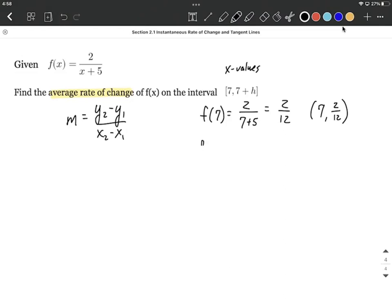The next one is we have that other x value, which looks strange, but that's okay. Let's go with 7 plus h, gets evaluated into the function, and we're going to get 2 over 7 plus h plus 5, which is going to work out to be 2 over 12 plus h, or h plus 12. From here, let's go ahead and make that into an ordered pair. So we input 7 plus h into the function as our x value, and we output 2 over 12 plus h.